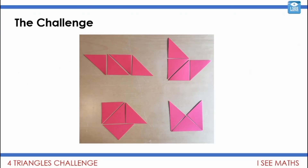You're going to have to make different shapes using four isosceles right-angled triangles — I can show you where to find some to cut them out in a moment. The rule is this: each of the four triangles in your shape must be joined to another matching-length side of another triangle. So in this example, all four triangles have a matching-length side they're joined to. This shape is another example using four triangles.